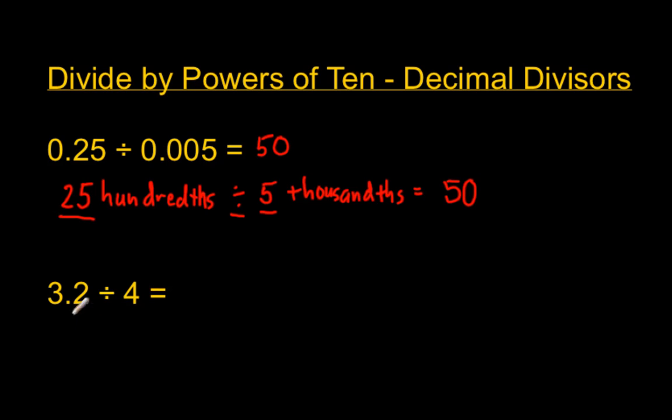Next problem. We have this number that looks like 32. It's 32 what though? It's 32, what place does it go to? 32 ones. And then we go to the decimal territory, which is tenths. So this is 32 tenths, 32 tenths divided by four ones.